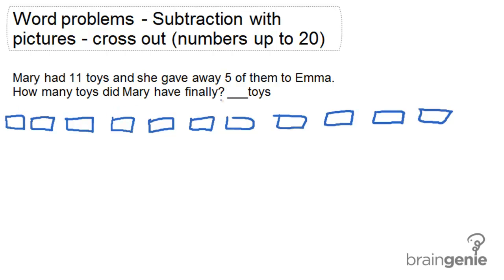Okay, so she starts out with 11 toys and they're in boxes. Then it says she gave away 5 of the toys to Emma.